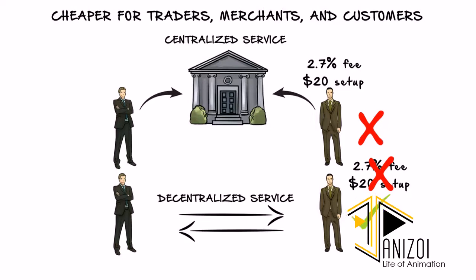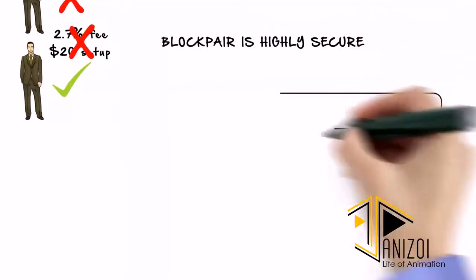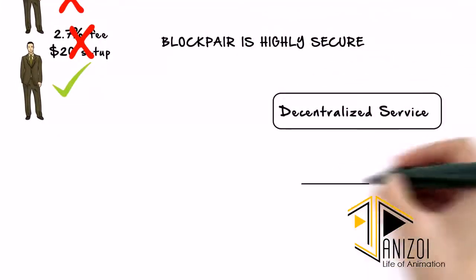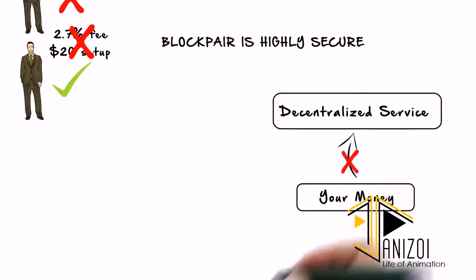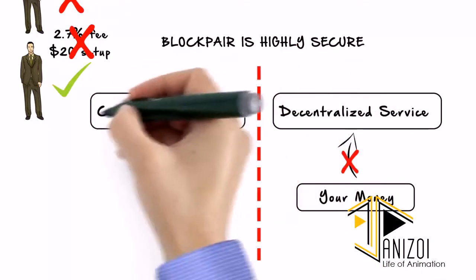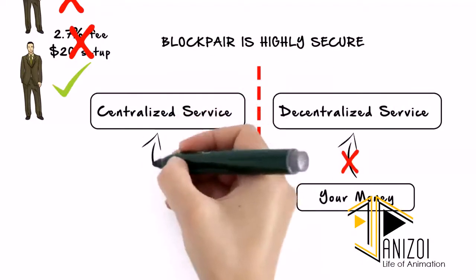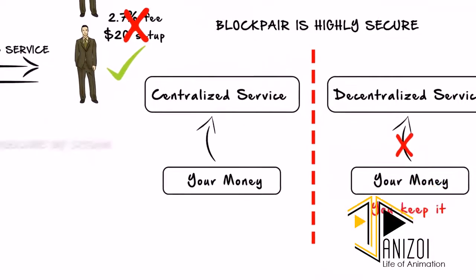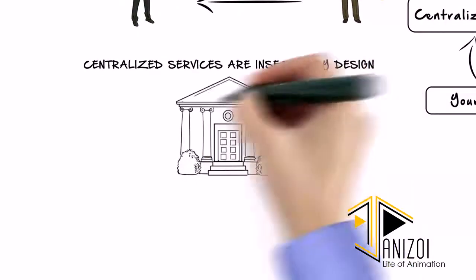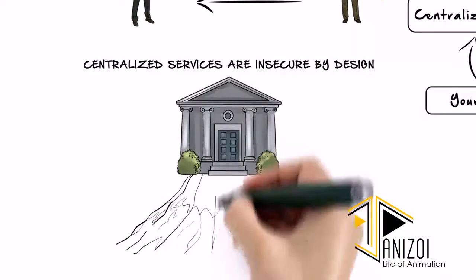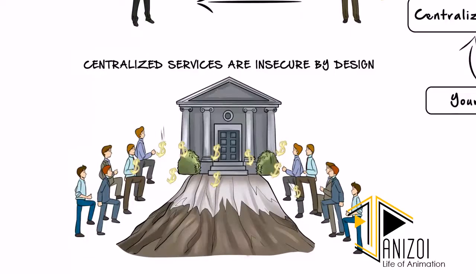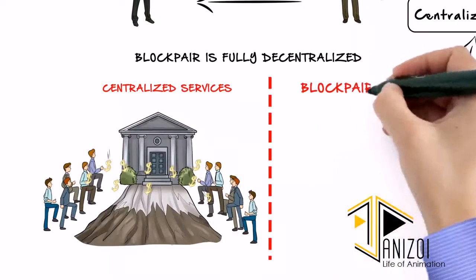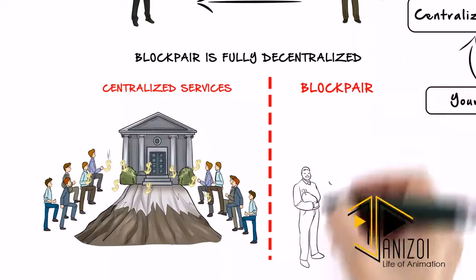It's a win-win for everyone. Another great benefit for users is the improved security. BlockPair does not need direct access to your money to complete trades. Centralized services require you to deposit your money in order to operate, and it is all stored in one big pool. Collectively, this flawed design has led to over half a billion dollars in customers' money being lost. BlockPair solves this security problem by decentralizing the money.